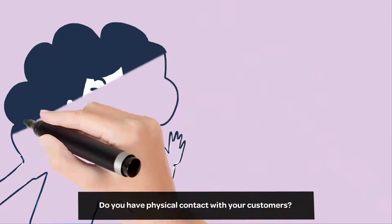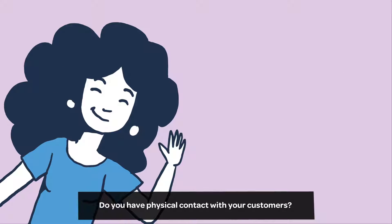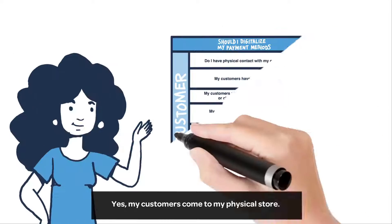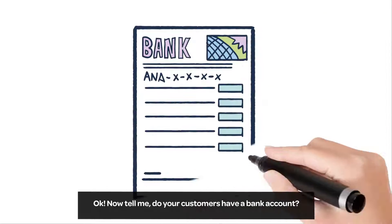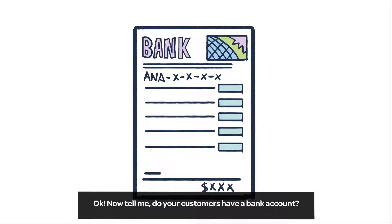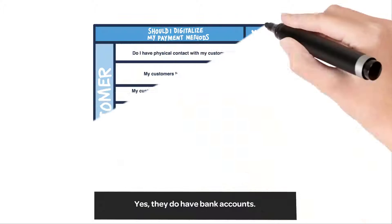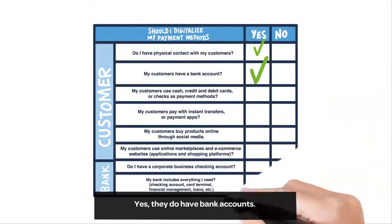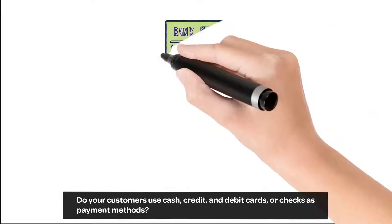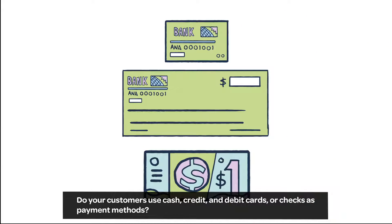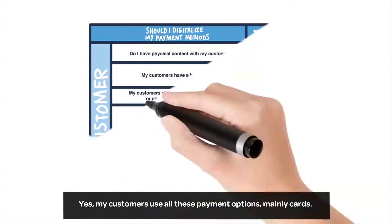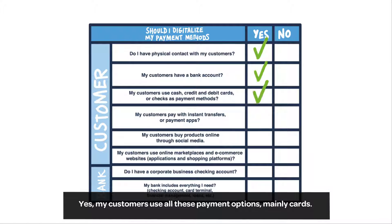Do you have physical contact with your customers? Yes, my customers come to my physical store. Now tell me, do your customers have a bank account? Yes, they do have bank accounts. Do your customers use cash, credit and debit cards, or checks as payment methods? Yes, my customers use all these payment options, mainly cards.